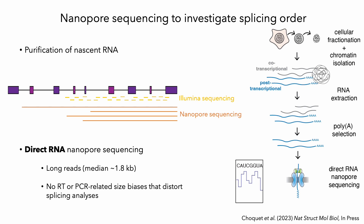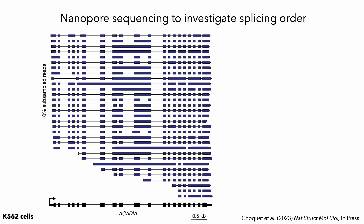We applied this protocol to human K562 cells. Here I'm showing you some example data mapping to one representative gene. On the bottom you can see the gene structure, where introns are shown as lines and exons as rectangles. Each of these dark blue arrows represents one read for one RNA molecule. Focusing on introns, you can see that some of these have already been removed and are shown as lines, whereas others are still present. Many of these reads contain a combination of introns that are still present and introns that have been removed, and it's these partially spliced reads that are really informative in terms of splicing order.